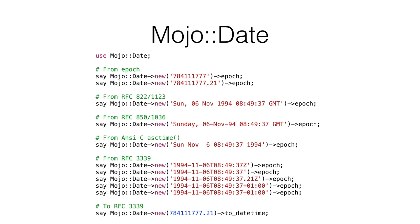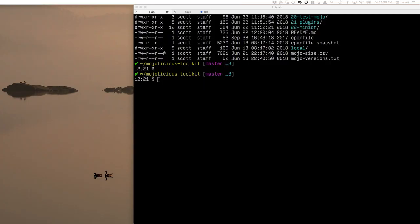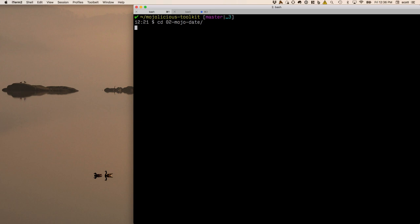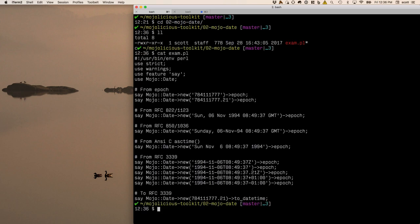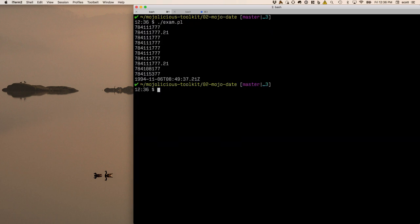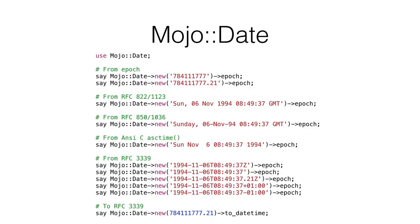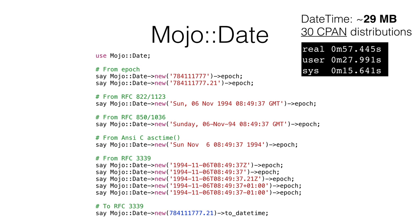MojoDate has one way to print a date — to_datetime — which returns an RFC 3339 style date. Running the example program shows all the epoch dates parsed, and finally the ISO 8601 date at the end. One interesting thing: remember the entire Mojolicious installation is a little over 2 megabytes. The DateTime module itself is 29 megabytes. MojoDate doesn't do everything DateTime does, but if you just need to parse web format dates, you could install all of Mojolicious just for its date parser and still come out ahead.